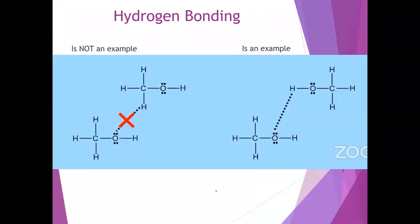Hydrogen bonding must occur when you have hydrogen atoms covalently bonded to a very electronegative atom such as fluorine, oxygen, or nitrogen. Sometimes you'll be asked to draw hydrogen bonds in, and you want to draw them with a dashed line. This is not an example of hydrogen bonding if the hydrogen is not bonded to nitrogen, oxygen, or fluorine. However, a hydrogen bonded to an oxygen can hydrogen bond to another oxygen — that is an example of hydrogen bonding.